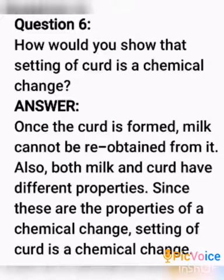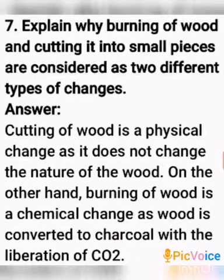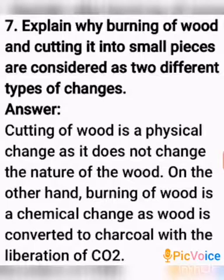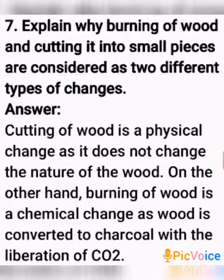Question number 7: Explain why burning of wood and cutting it into small pieces are considered as two different types of changes. Answer: Cutting of wood is a physical change as it does not change the nature of the wood. On the other hand, burning of wood is a chemical change as wood is converted into charcoal with the liberation of carbon dioxide.